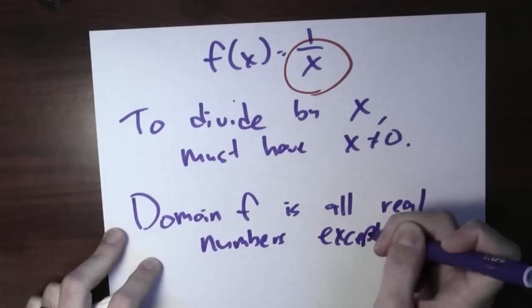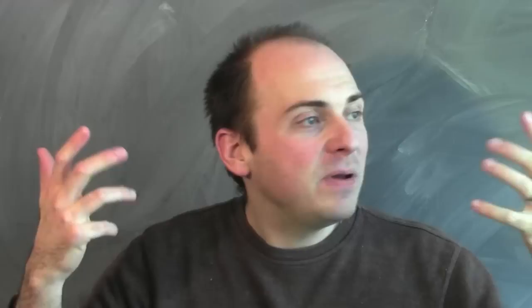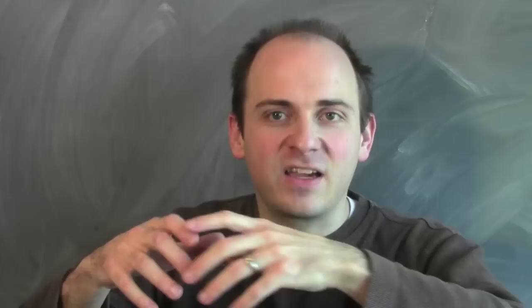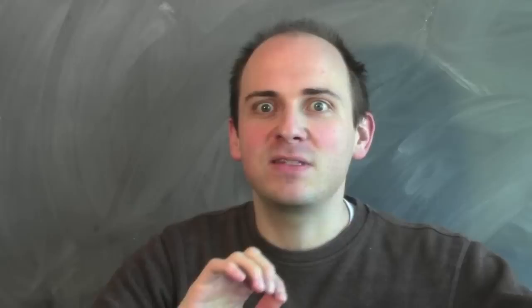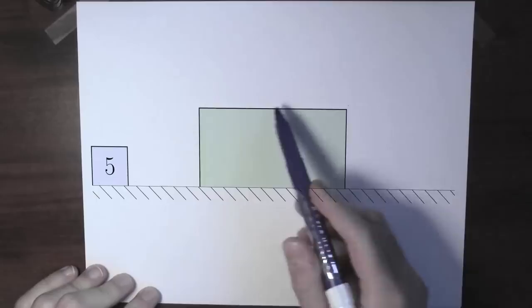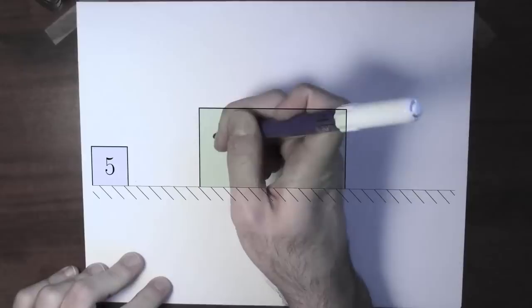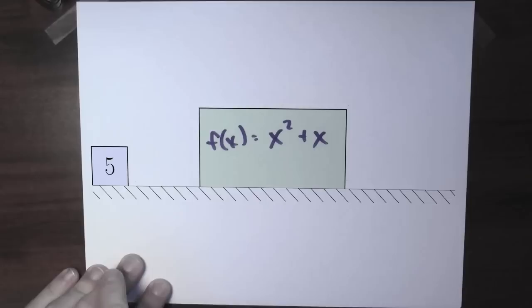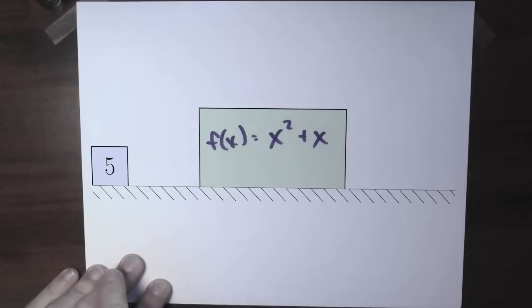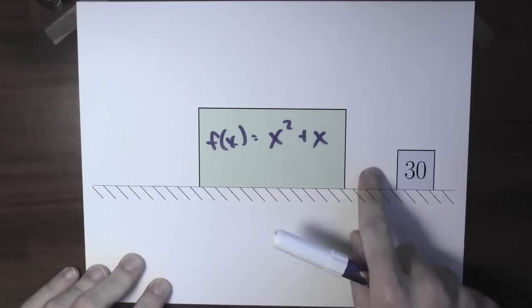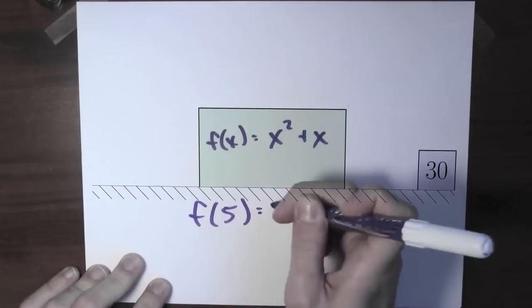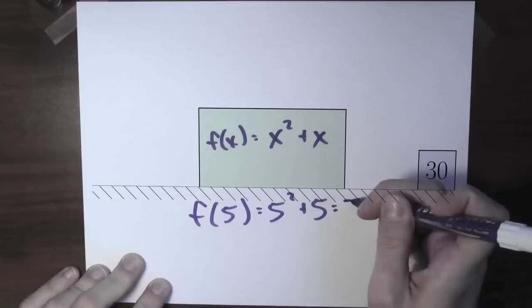A function takes some input and produces some output — that's what it does. Here's one metaphor you could use: imagine a conveyor belt with the function. Numbers come in, get hit by the function, and go out transformed by whatever the rule is. I've got a conveyor belt here with a big box — that big box is the function. The input is the number 5. Maybe this is the function f of x equals x squared plus x. The number 5 moves through the machine and comes out as 30, because f of 5 is 5 squared plus 5, which is 25 plus 5, which is 30.